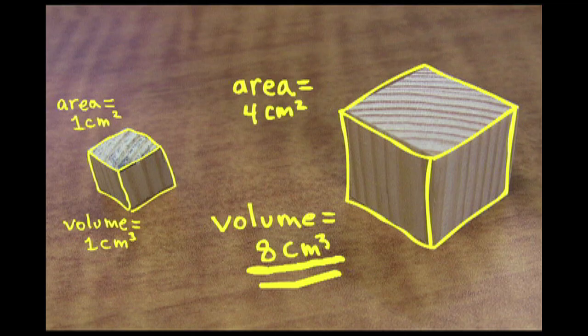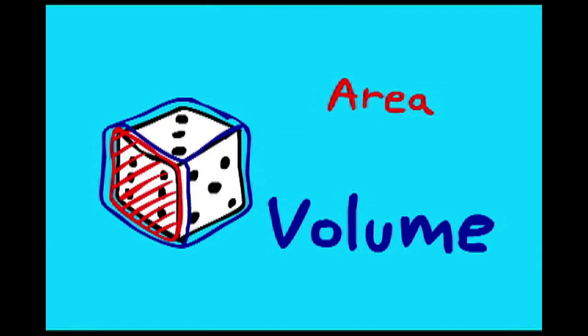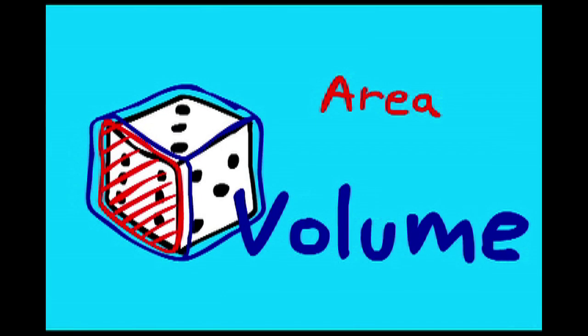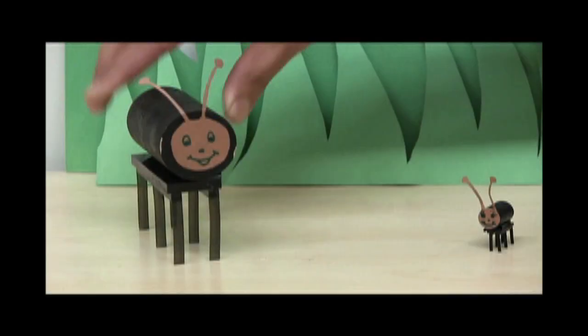Let's review what we've learned today. The square cube law tells us that when an object grows in size, its volume increases faster than its area. We've seen how this can be applied to buildings, animals, and falling objects.